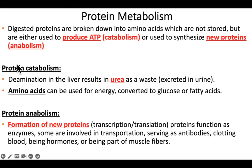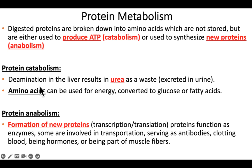When we undergo protein catabolism, one thing we need to do with those amino acids, if the plan is to utilize them for energy, is to deaminate the amino acids. Every amino acid has a group known as the amino group, and in order to use that amino acid for energy, that amino group has to be removed — we call that deamination. When the liver does that, it produces urea as a waste product. So that's part of protein catabolism.